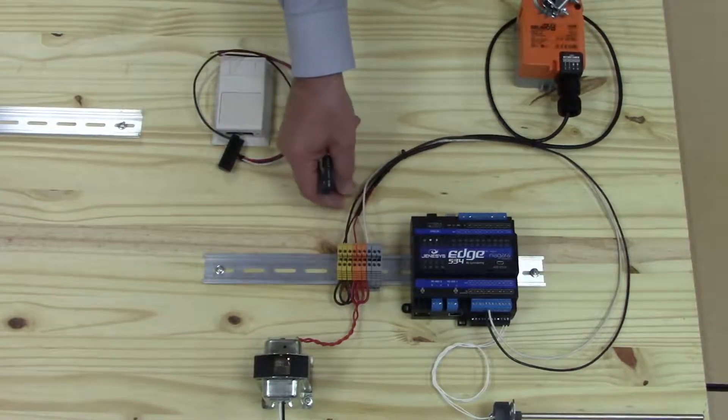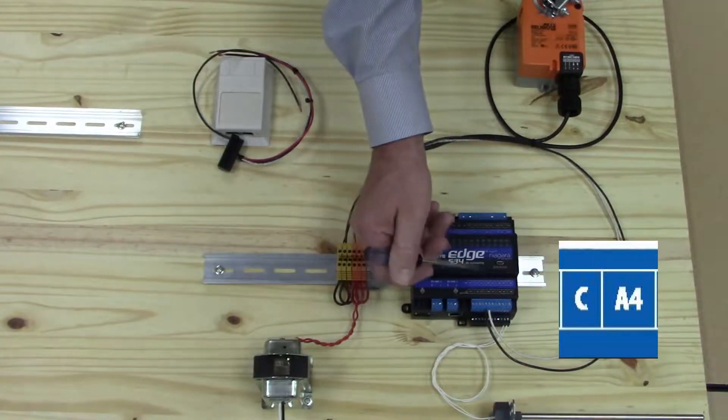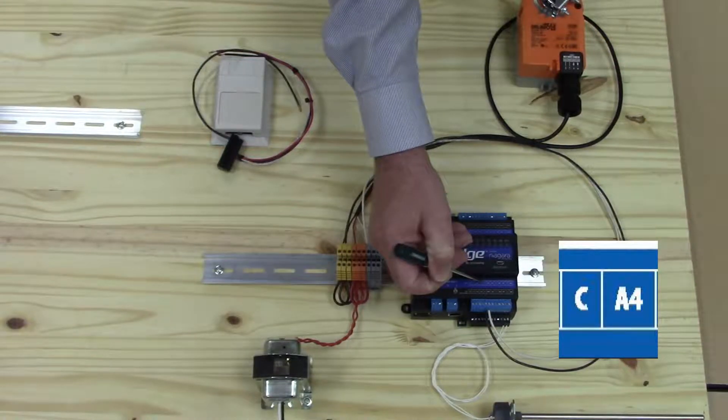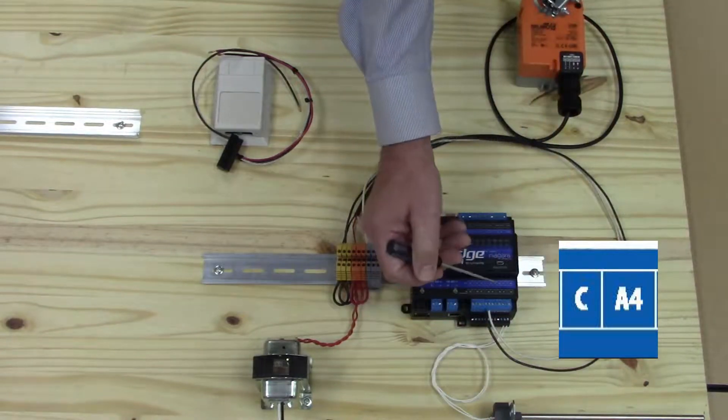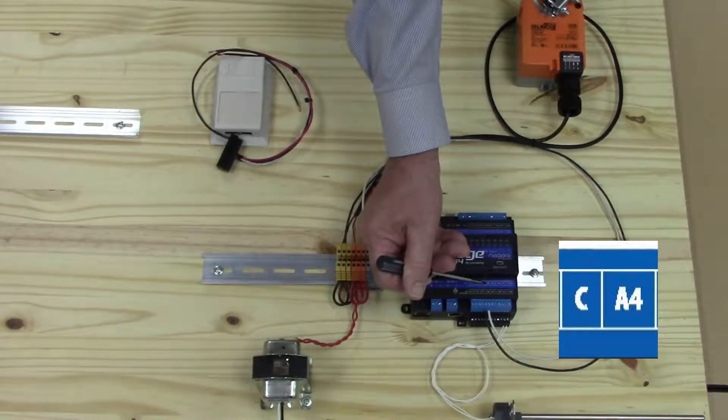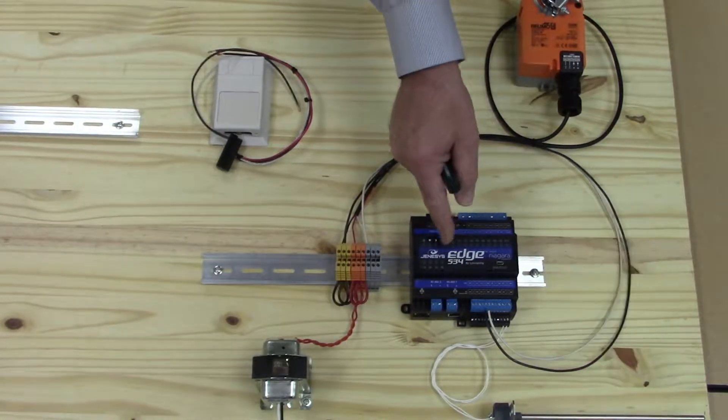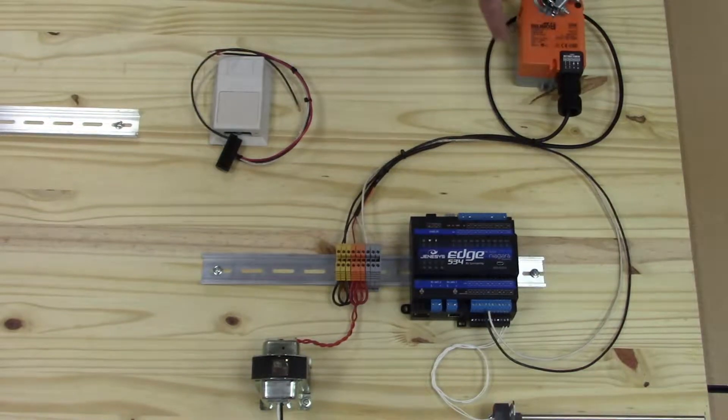Coming back from the terminal we have a black wire looping into the common of our controller. Then we have white, which is the signal wire, wired back into A4. Now the Edge 534 controller can provide 10 volts of power signal to the BLEEMO actuator and control it properly.